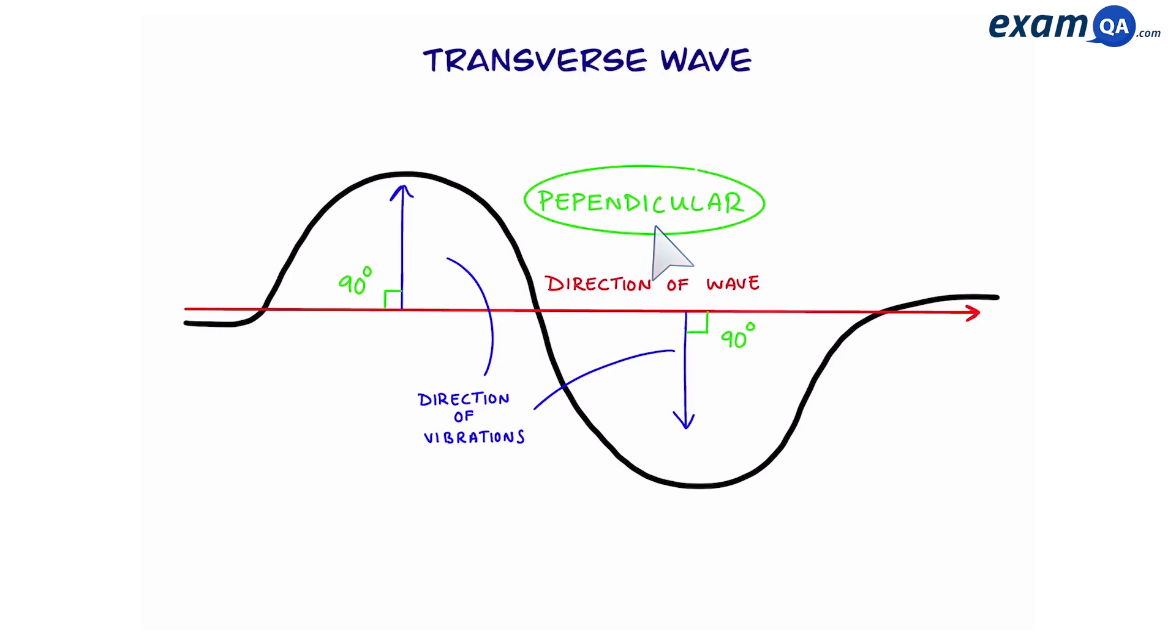This wave is known as a transverse wave. So a transverse wave is when the direction of the wave is perpendicular to the direction of the vibrations. And examples include electromagnetic waves such as light and x-rays, but also S waves which are another type of seismic wave. And also ripples on water are another type of transverse wave.